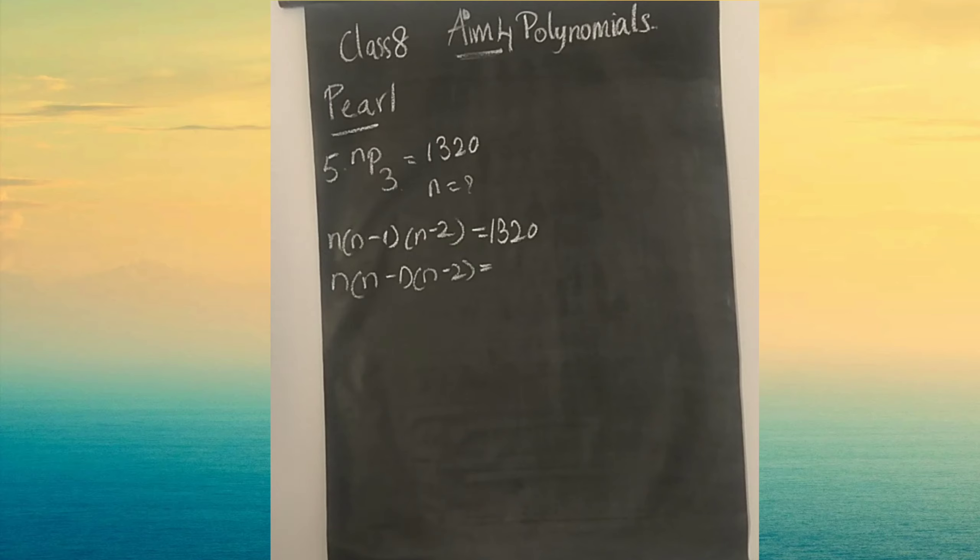1320 can be written as 12 into 11 into 10. Now you can see they are consecutive. Like the fourth question, n value will be 12 because 12 minus 1 is 11, 12 minus 2 is 10. So n value is 12 and option is C.